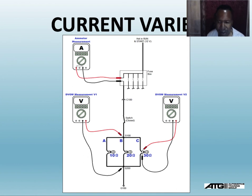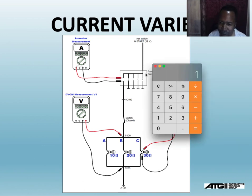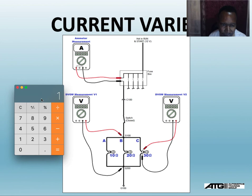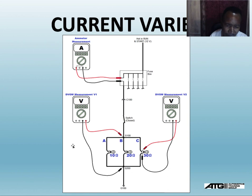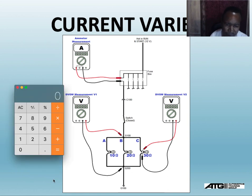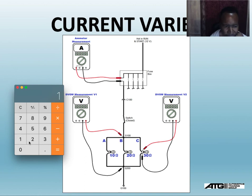Now let's look at a different example. 12 volts again, but now I have 10 ohms, 20 ohms, and 30 ohms. Let's see how many amps flow through each and verify the 12-volt drop rule. Using Ohm's law: 12 volts divided by 30 ohms equals 0.4 amps — that's 400 milliamps. I'll show you the decimal conversion later; 400 milliamps is four-tenths of an amp.